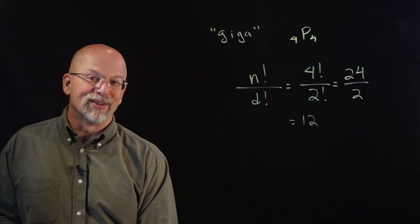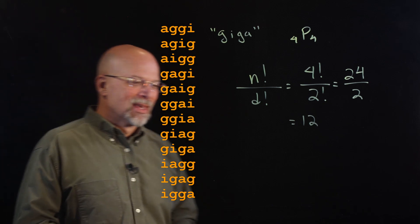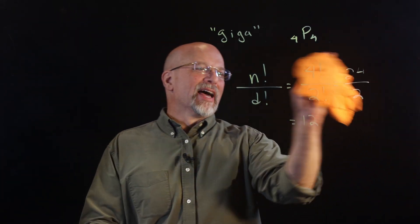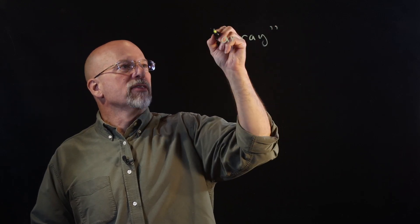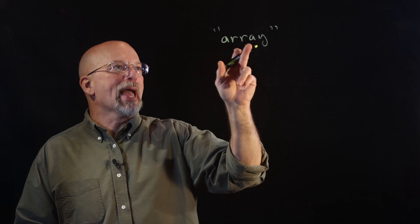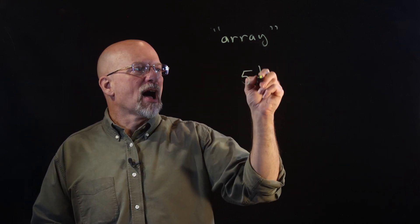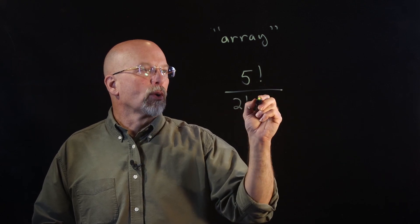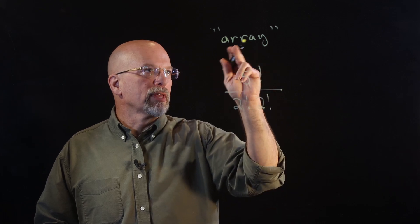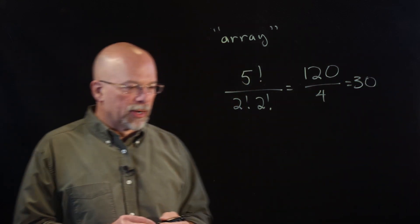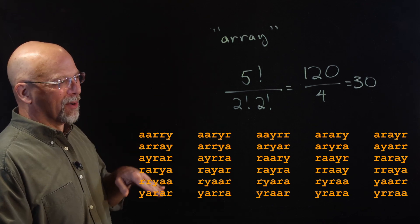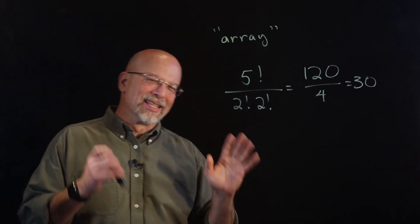How many ways can we sort five letters? For five distinct letters it's just 5! = 120. But for the letters in the word 'array,' there are two duplicate A's and two duplicate R's. So it's 5! / (2! × 2!) = 120 / 4 = 30. There are 30 different ways to arrange the letters in 'array.'